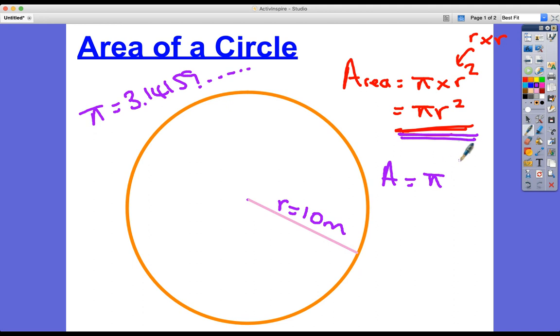Times 10 squared, which is 100 times pi, which is - we work this out - which is 314 metres squared, to three significant figures or to the nearest whole number.